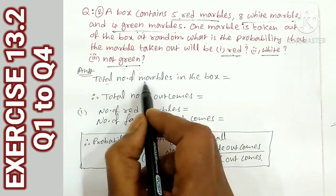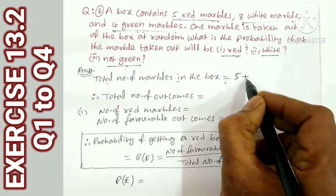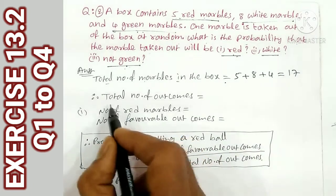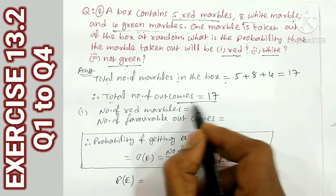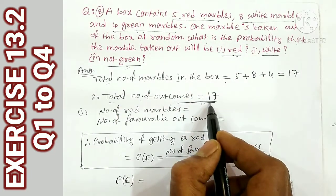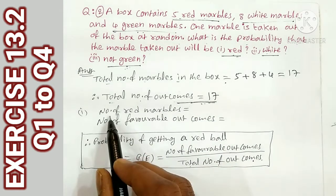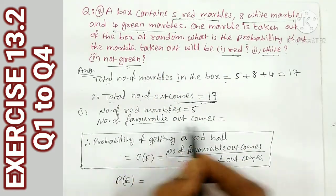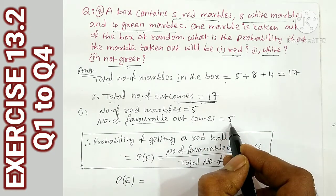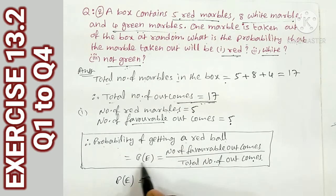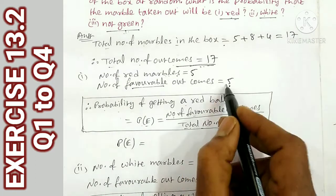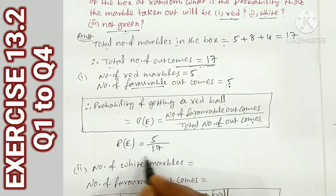The total number of marbles in the box is 5 plus 8 plus 4 = 17. That is the denominator — the total number of outcomes. The number of red marbles is 5, so the number of favorable outcomes is 5. Probability of getting a red marble = favorable outcomes / total outcomes = 5/17. That is the answer.